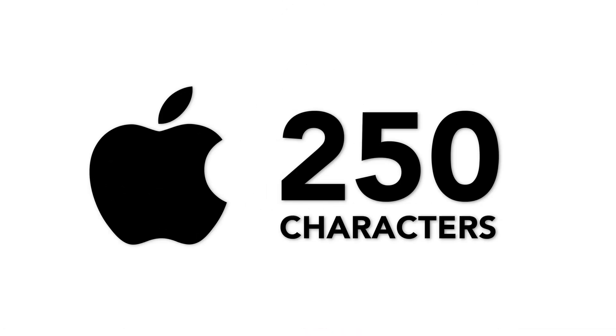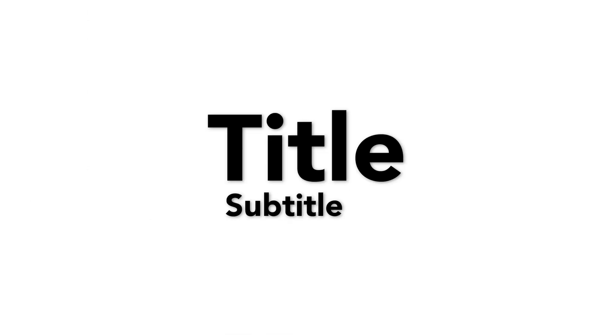Apple allows your title to be up to 250 characters long, so you can create a title and then a subtitle with your keywords. Google allows for only 30 characters, so you have to make sure that you are extremely concise and to the point about what your app is about.